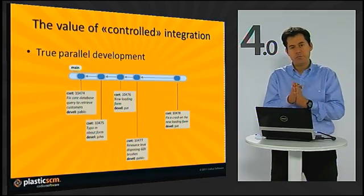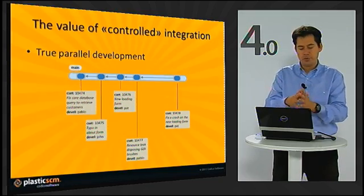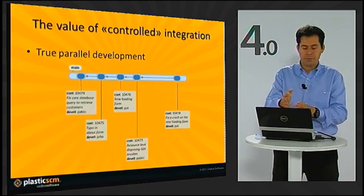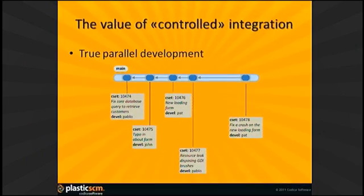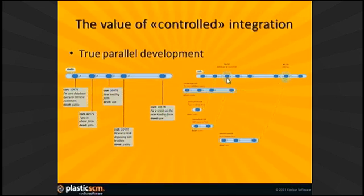Let me show you the value of controlled integration versus what we call serialized or non-parallel development. True parallel development cannot be achieved without branching. Look at the picture on screen — we have different changesets, each containing a task. This is not truly parallel; a truly parallel approach is what you see now on screen: different tasks with different check-ins, where the tasks can vary in size. Some of them can be integrated into the next release, and some will wait until the next one.